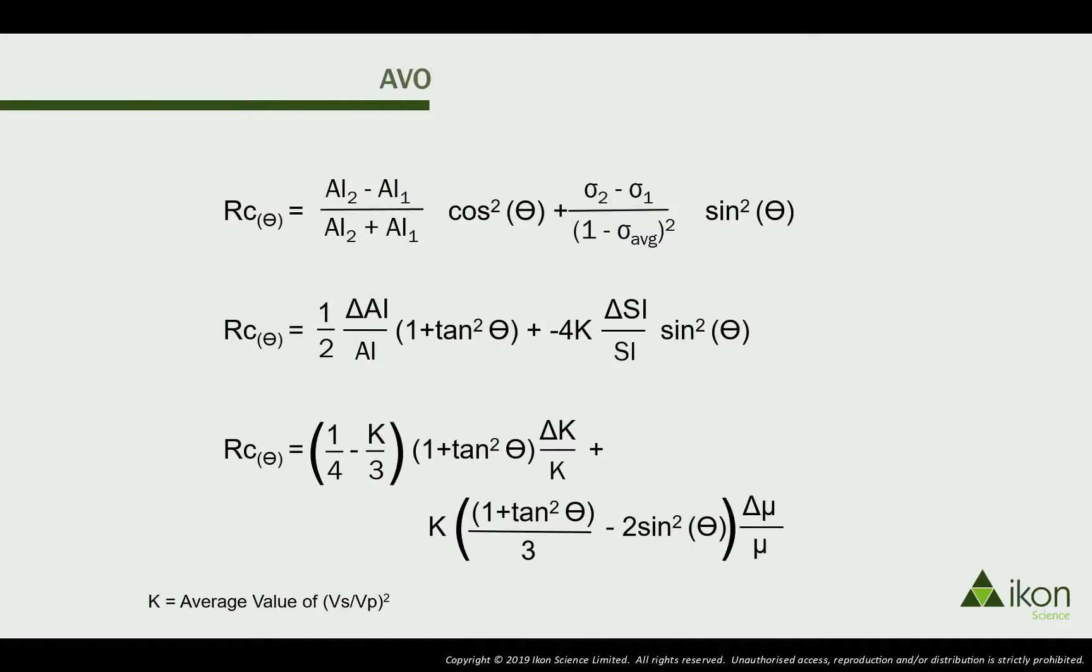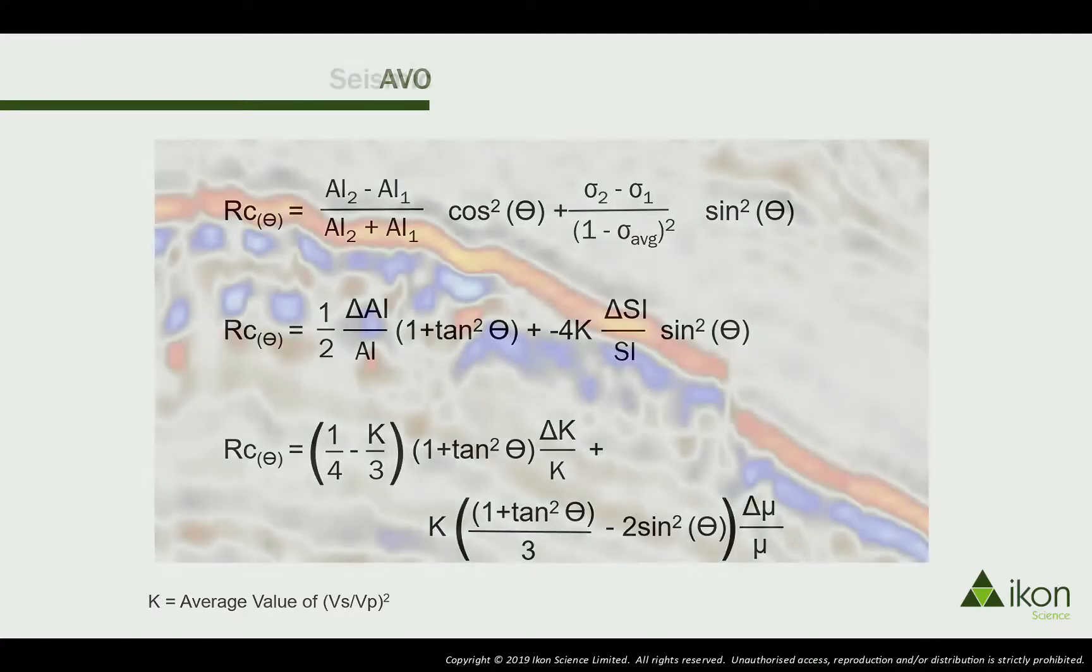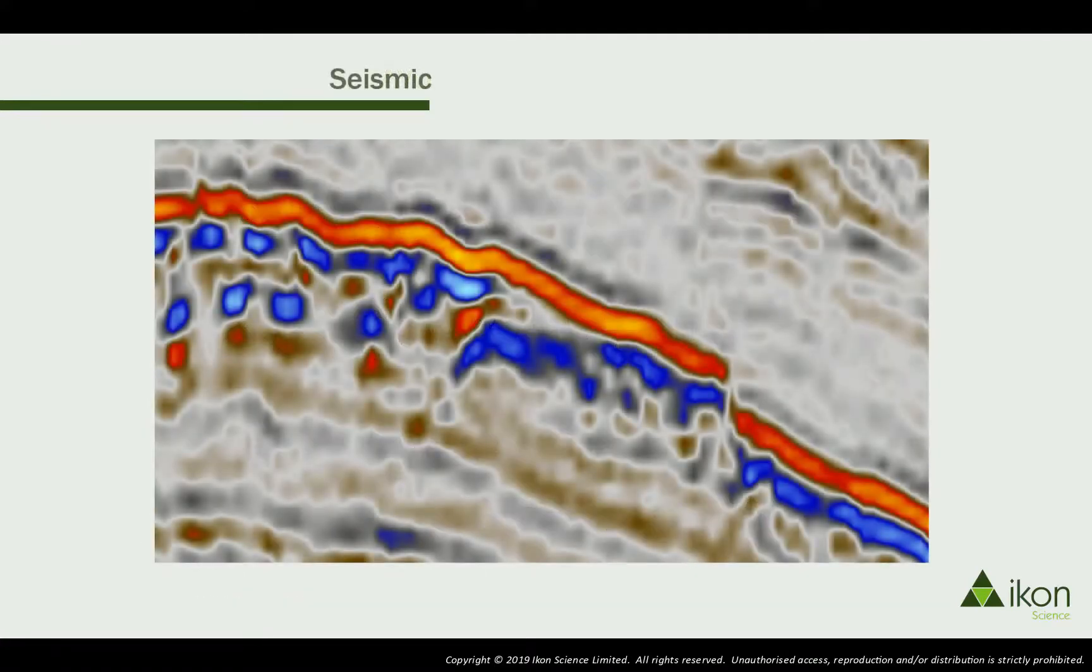So the way the amplitude changes with angle in our seismic data allows us to calculate the elastic contrast between layers. When combined with a low-frequency background model from our wells, for example, we can then calculate the absolute elastic properties of the rocks.